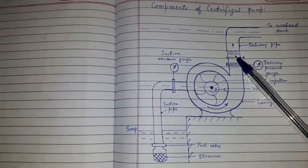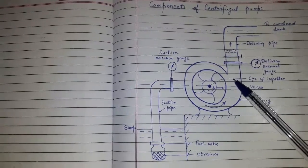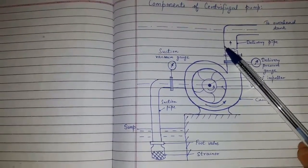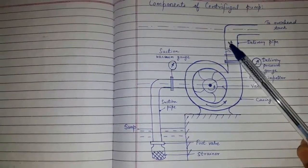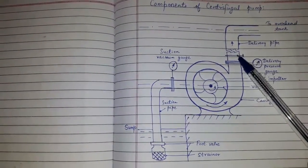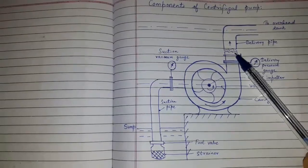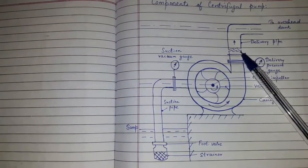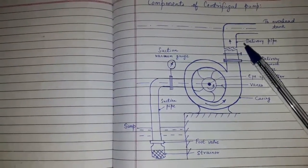Delivery pipe: Delivery pipe connects the output of the pump up to the point where it has to be delivered. A valve is provided near the output of the pump called delivery valve. It regulates the supply of liquid from the pump.